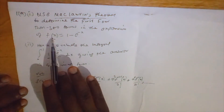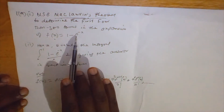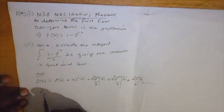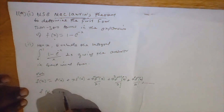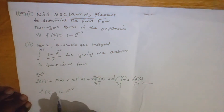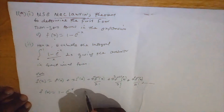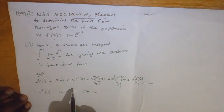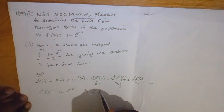We have been given that f of x equals 1 minus e to the negative x. Now when we substitute x with 0, we have f of 0 equals 1 minus e to the 0, which is 1 minus 1, so f of 0 equals 0.